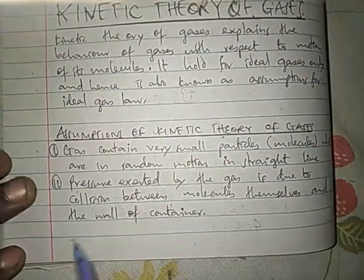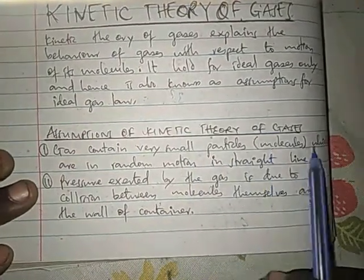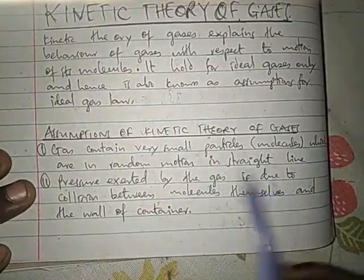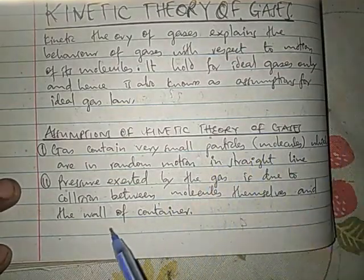Now, let's look at the assumptions of kinetic theory of gases. First, gases contain very small particles, molecules, which are in random motion in a straight line. So, these particles are in random motion in a straight line.